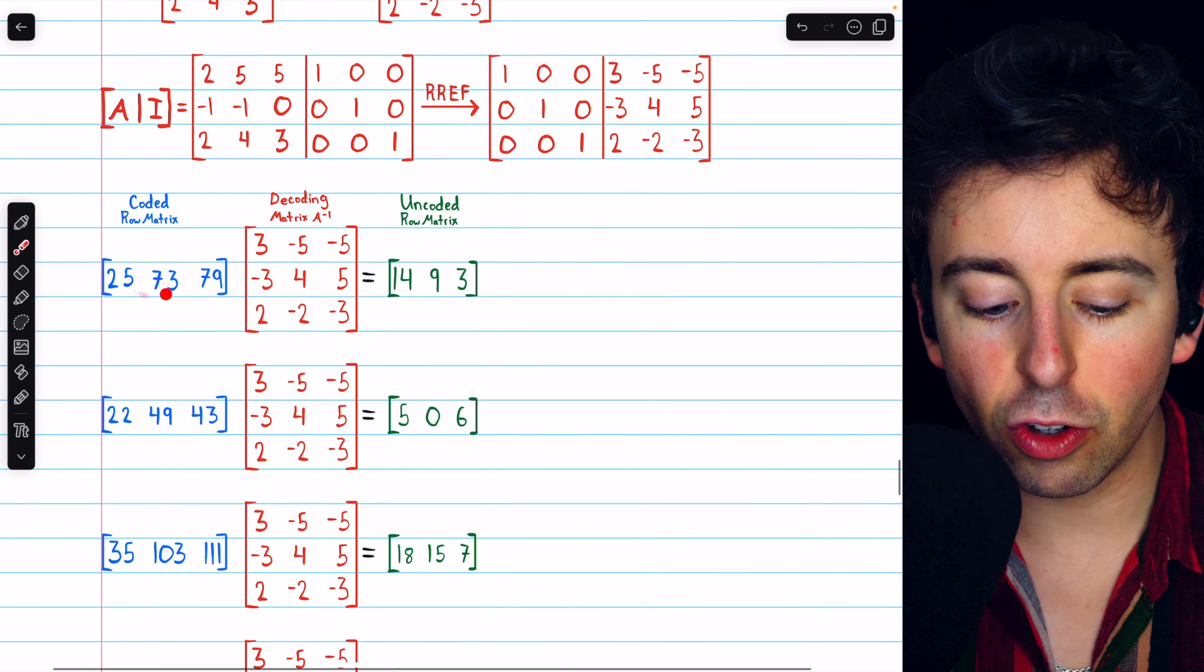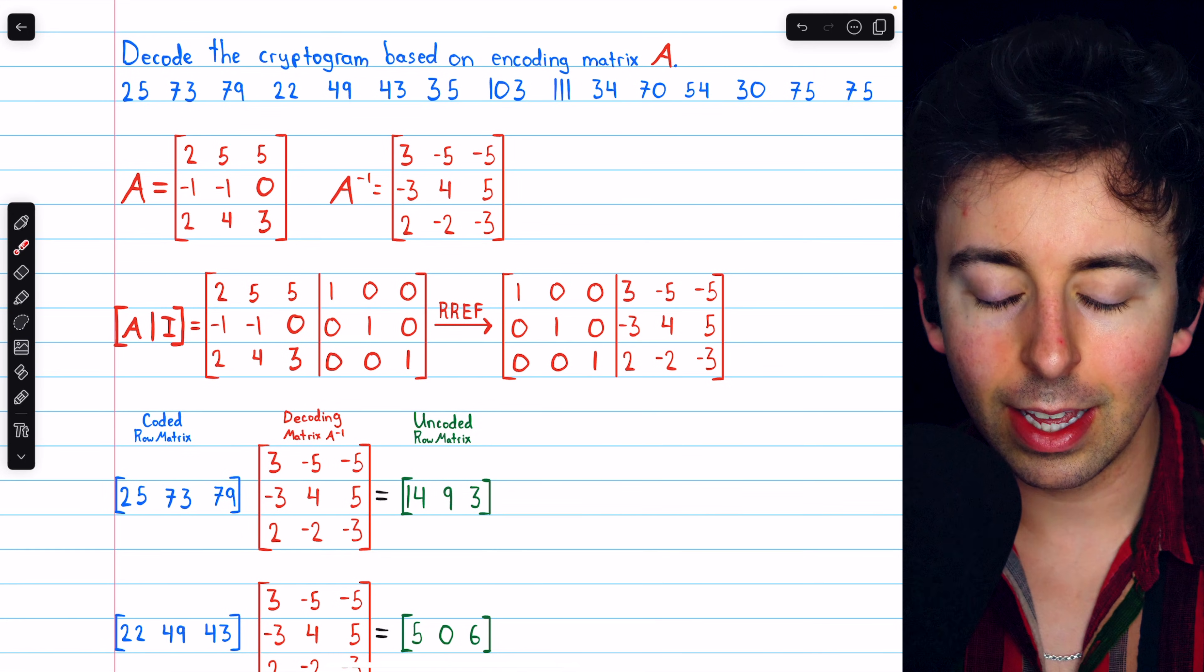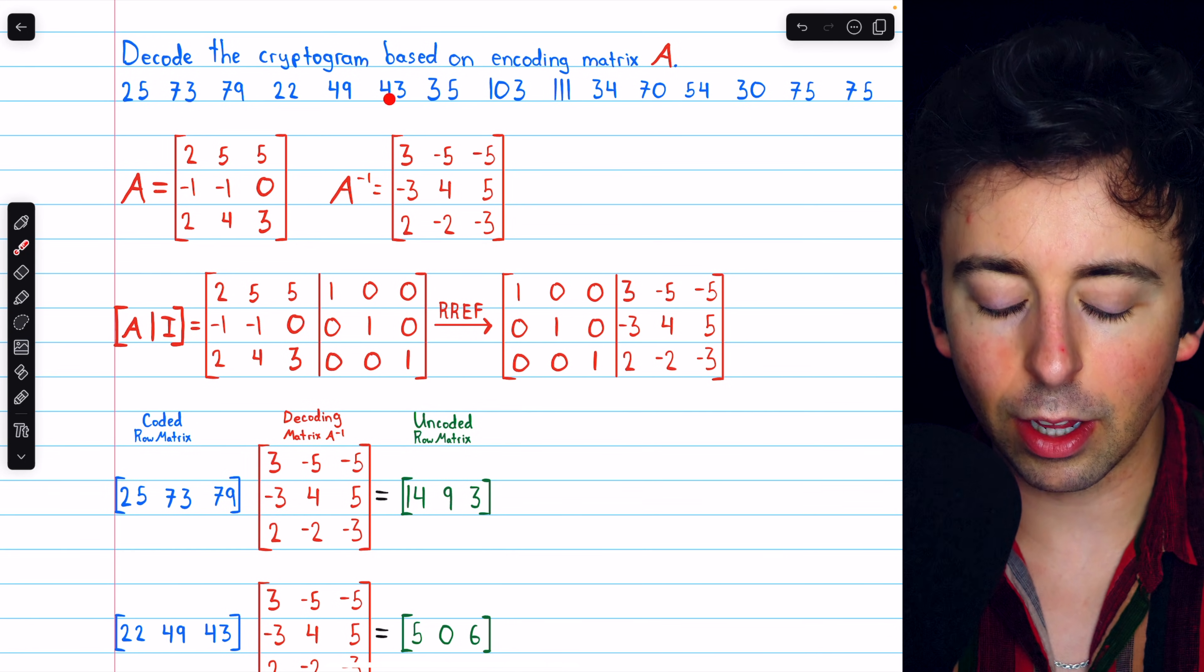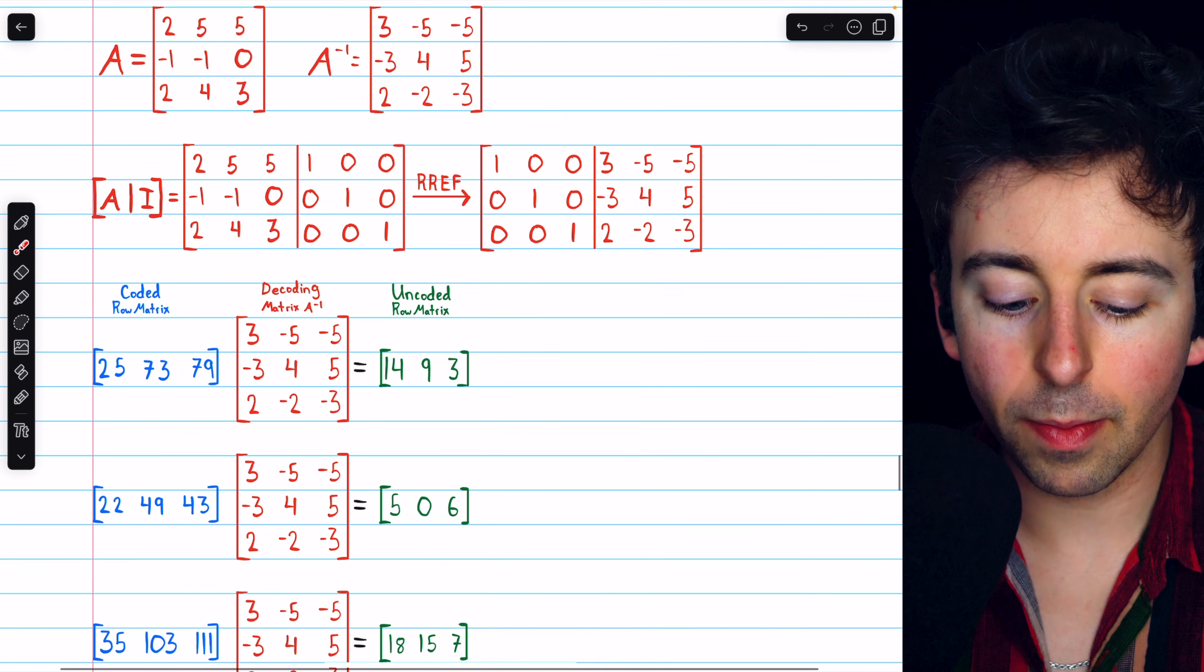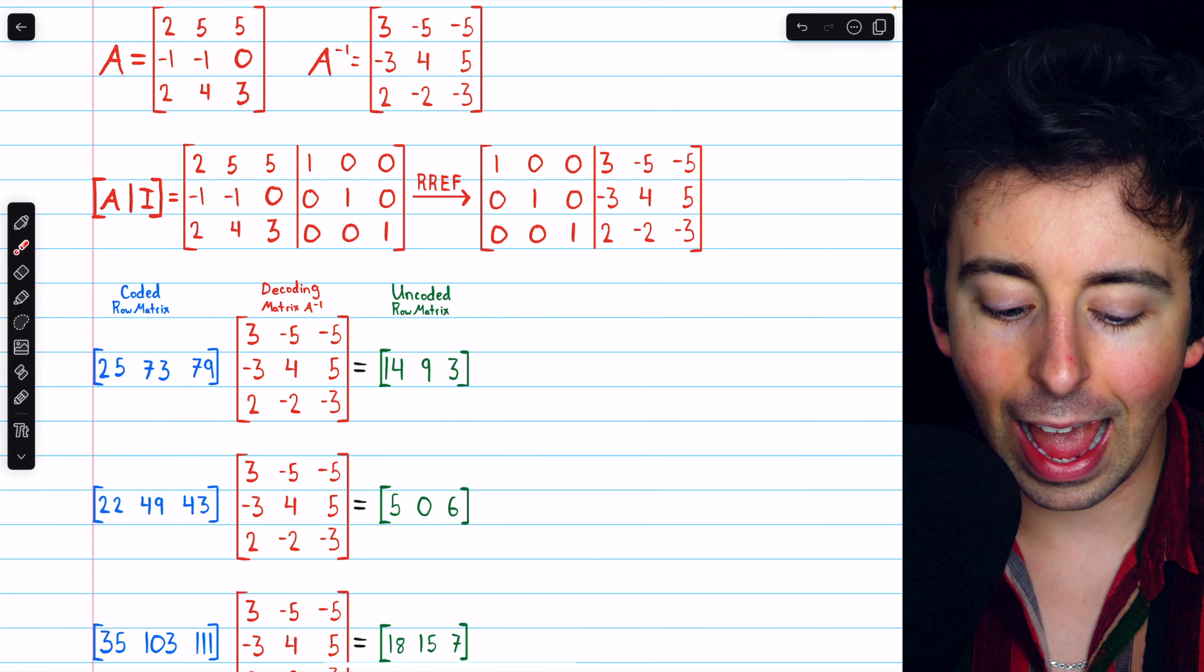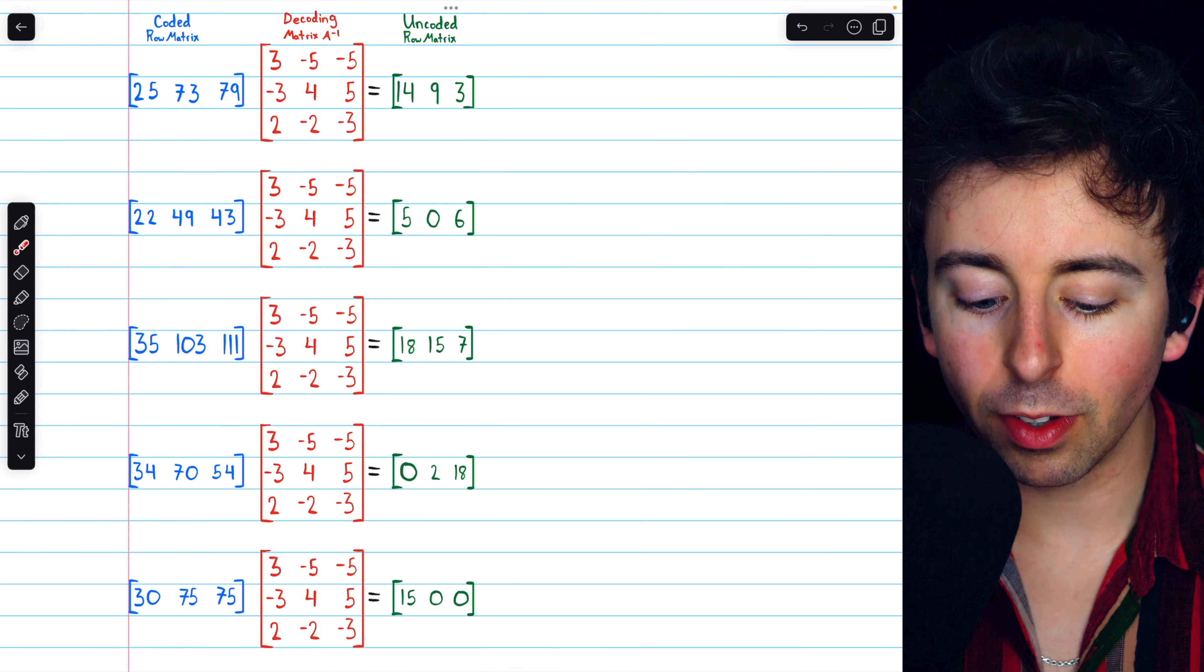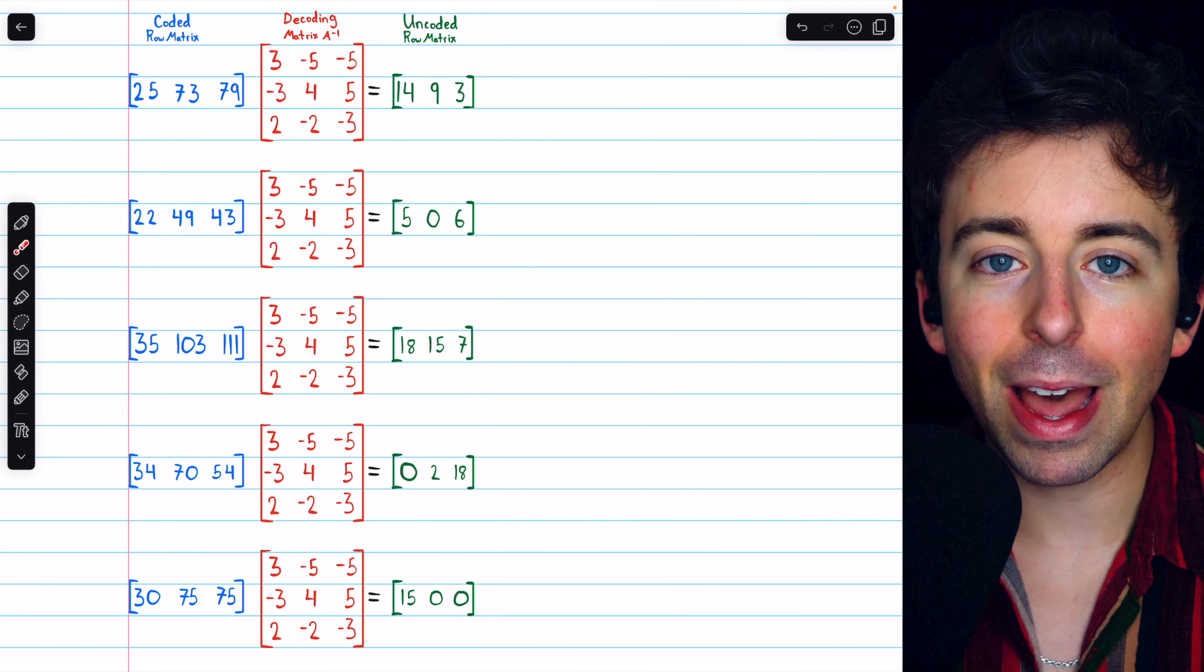We take each coded row matrix. For example, 25, 73, 79 is the first coded row matrix. 22, 49, 43, that's the second coded row matrix. We take each one and multiply it on the right by the decoding matrix A inverse. Doing this, we get five uncoded row matrices, which we can easily turn back into the original message.